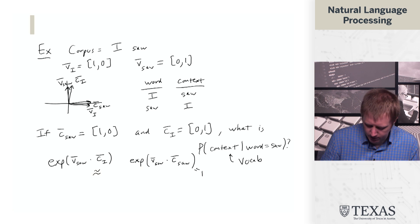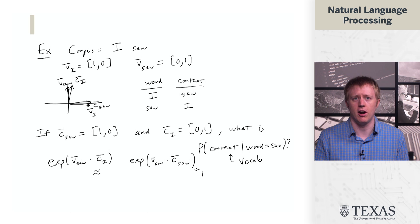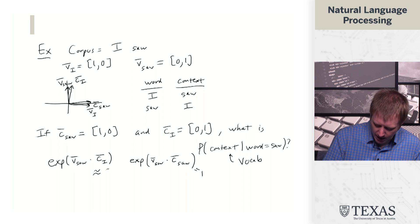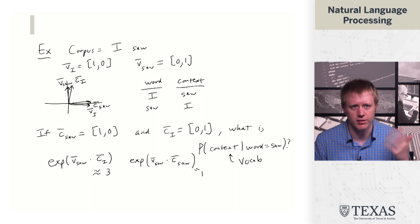So vsaw and seesaw here are orthogonal if you look up at the picture. And so the exp of this is going to be 1. And then vsaw and CI are aligned. Their dot product is going to be 1. And then the exp of that, we're going to say it's roughly equal to 3. We're going to assume e is 3.